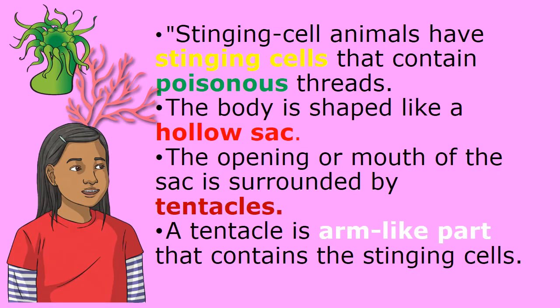Stinging cell animals have stinging cells that contain poison threads. The body is shaped like a hollow sack.